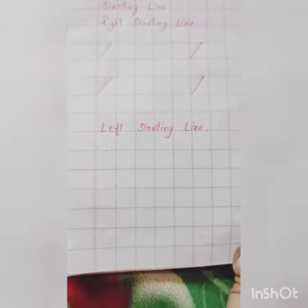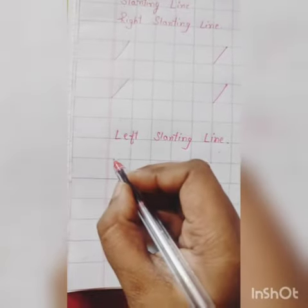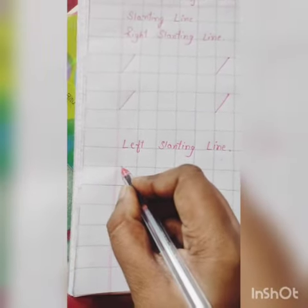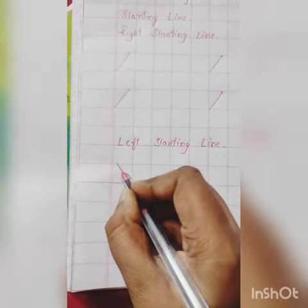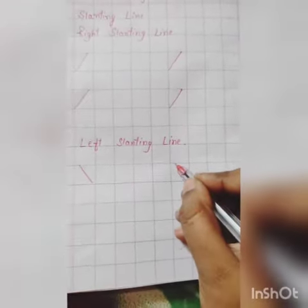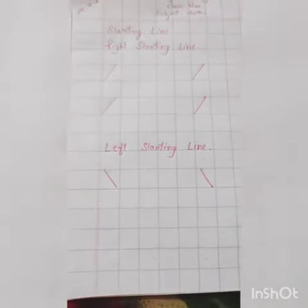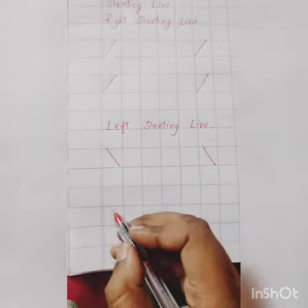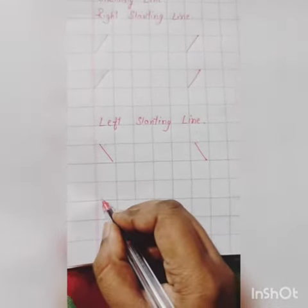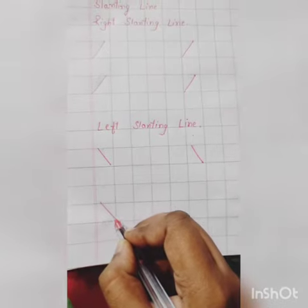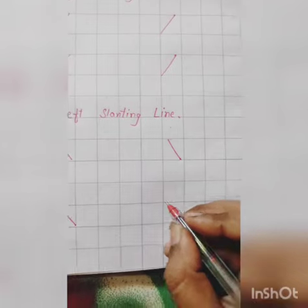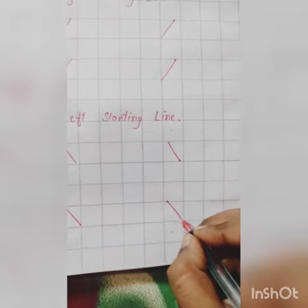For the left slanting line, we will start again from the top of the column to the bottom and bend towards left, like this. One more time — bring your pencil down and bend towards left. Once again like this. I hope you understood.